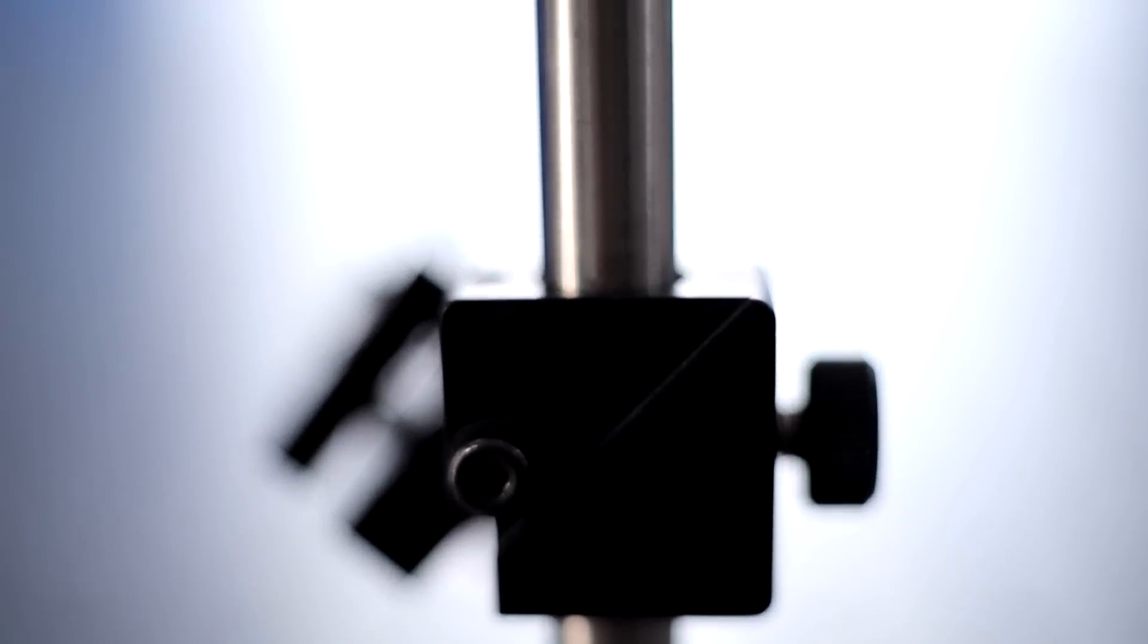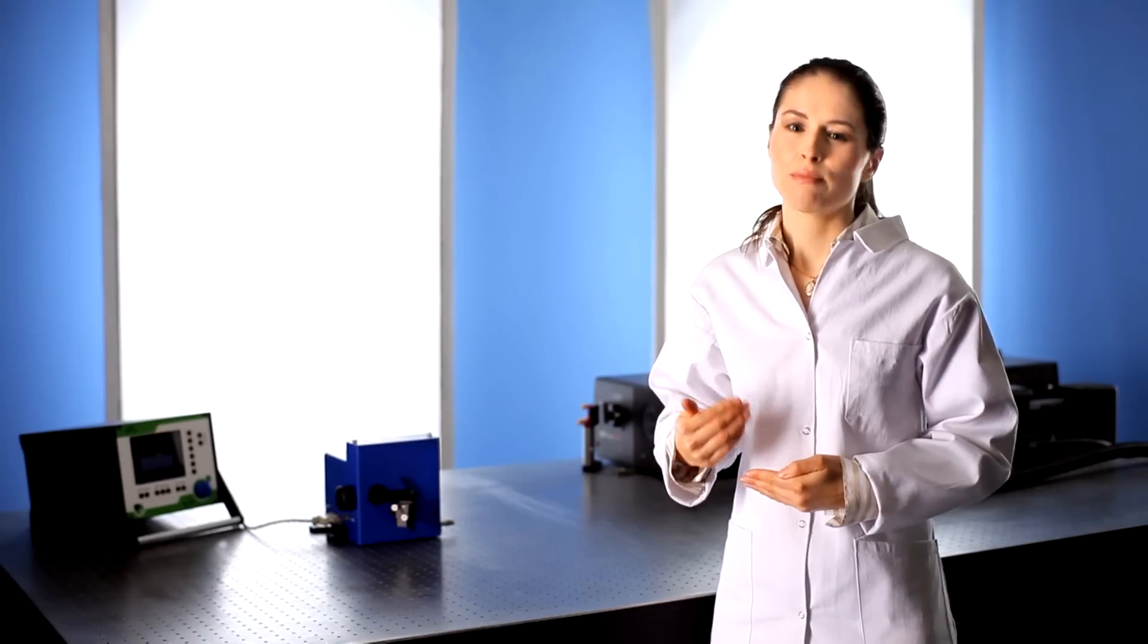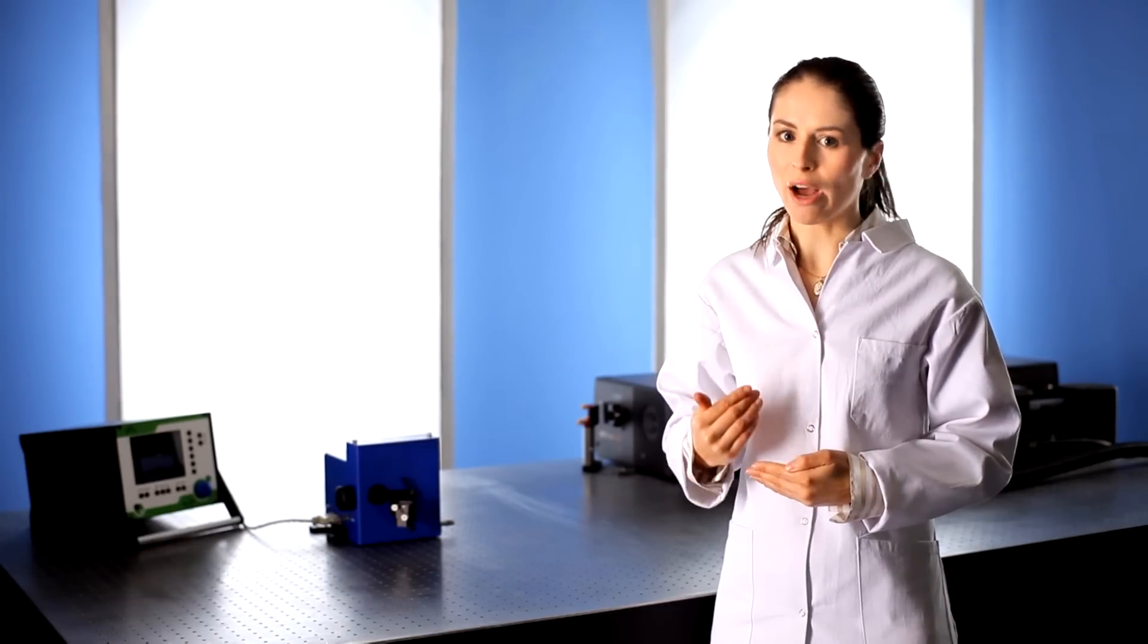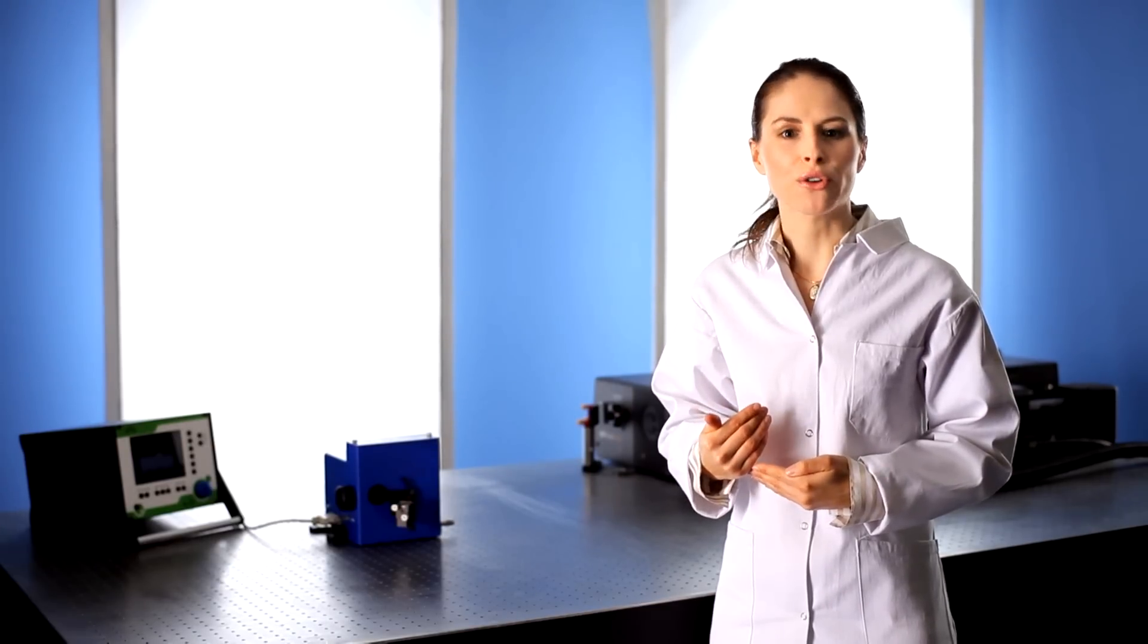When you set up pulse check, you needed to align the incoming beam. That required us to set pulse check to collinear mode. But to optimize your measurements, we now have to set pulse check to non-collinear mode. Let me show you the difference.